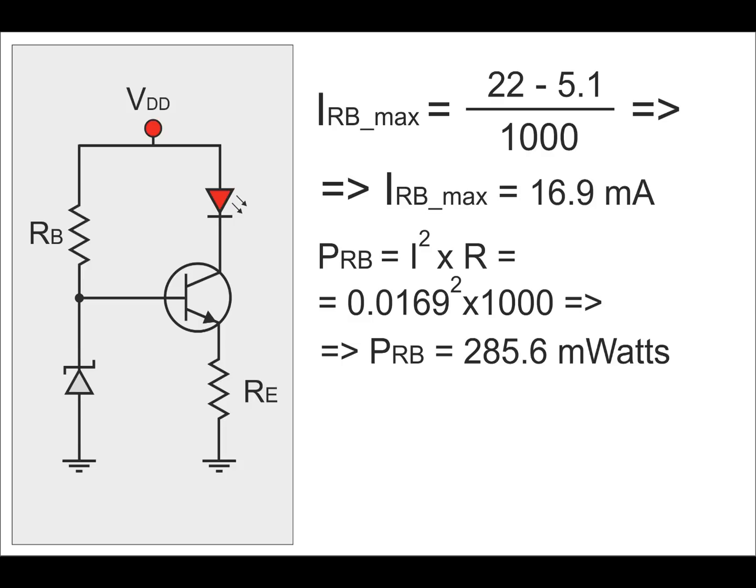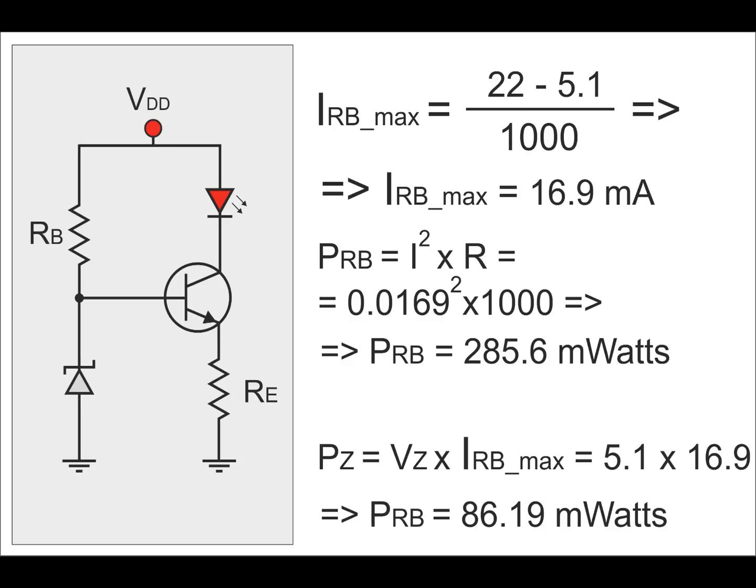As for the Zener diode, the power dissipation is calculated by multiplying the Zener voltage by the current through the base resistor. The power dissipation on the Zener is about 86 mW, so a typical 300 mW diode is enough.